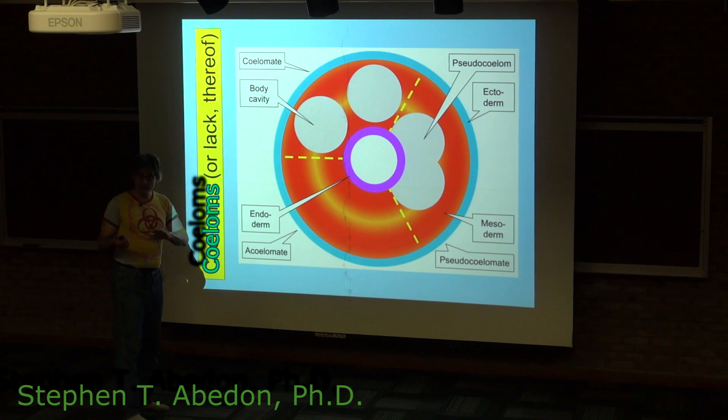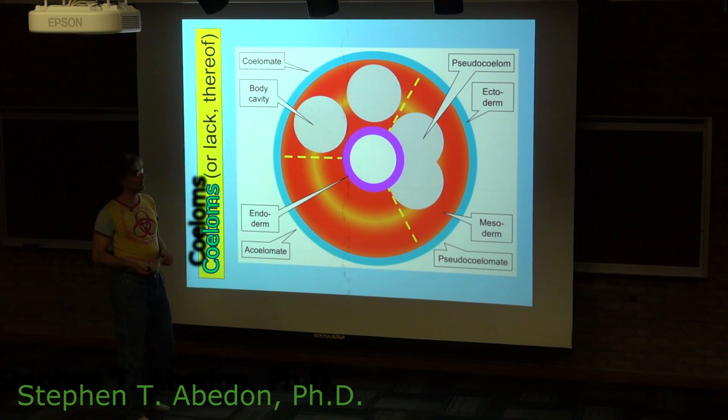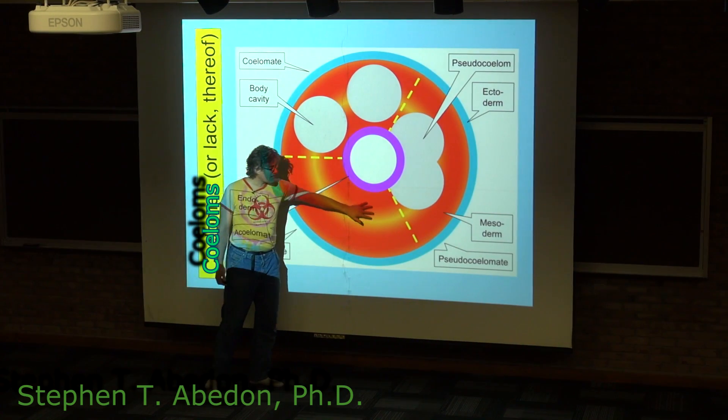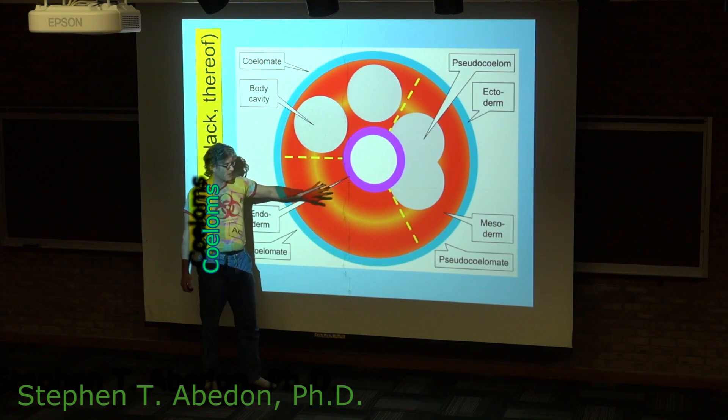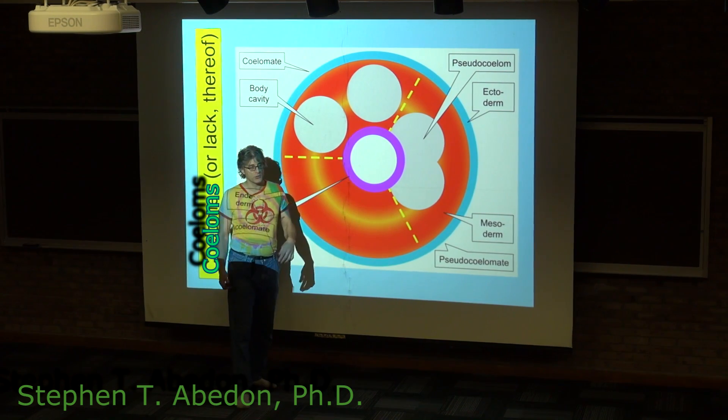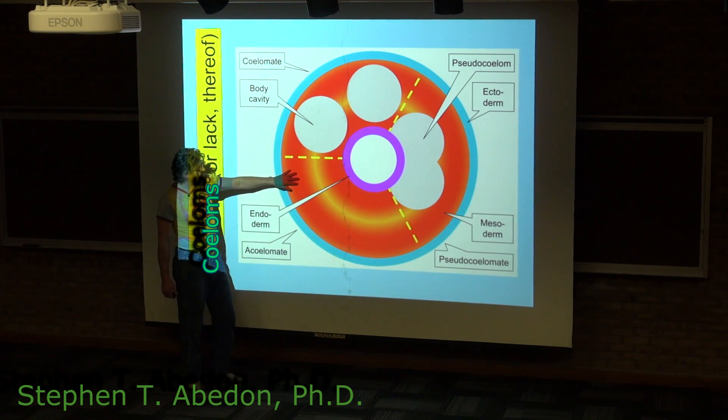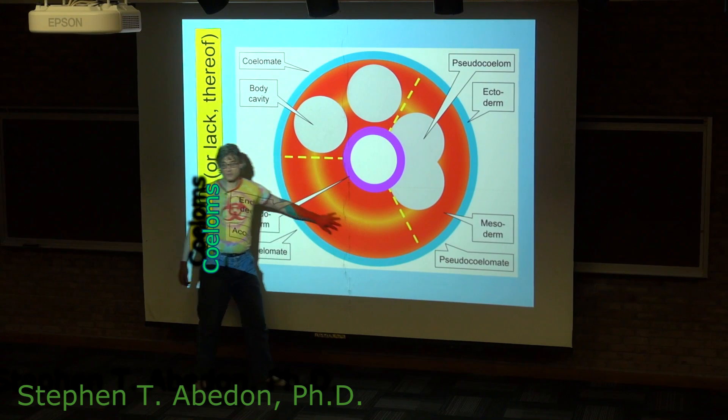These are all bilaterally symmetrical and cephalized animals. There are three ways that the mesodermal tissue is presented. The simplest, although not very common, is known as the acoelomate form.